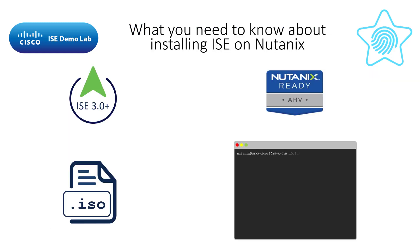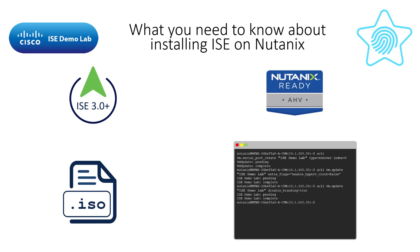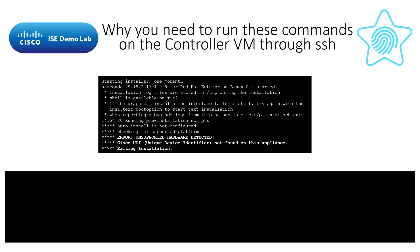On Nutanix, the Cisco-supported version is 3.0 and newer. You must use AHV, the Acropolis hypervisor, as the installed hypervisor for Nutanix. ICE installation on Nutanix is only possible using the ICE installation ISO, and there are some additional configurations needed per VM to be able to run ICE on Nutanix — specifically these commands. If you do not run these commands on the Nutanix controller VM, or CVM, then ICE will think that you are trying to install onto a non-supported bare metal server and will abort the installation.